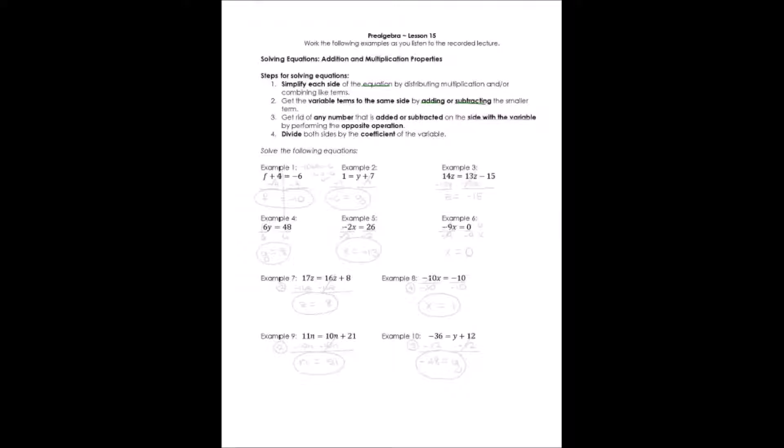Step number three, we get rid of any number that's been added or subtracted on the side with the variable. That's very important. Work from the variable side. Now, how do we do it? We perform the opposite operation. And step four, our final step is usually, most of the time, we'll be dividing both sides by the coefficient of the variable.